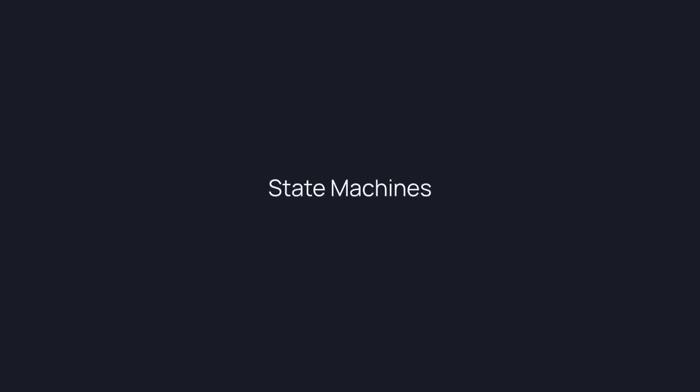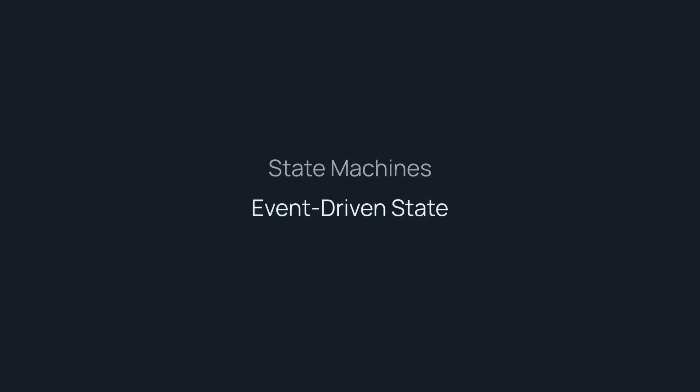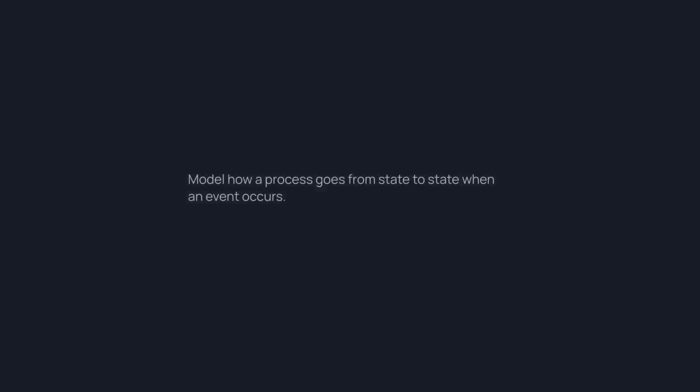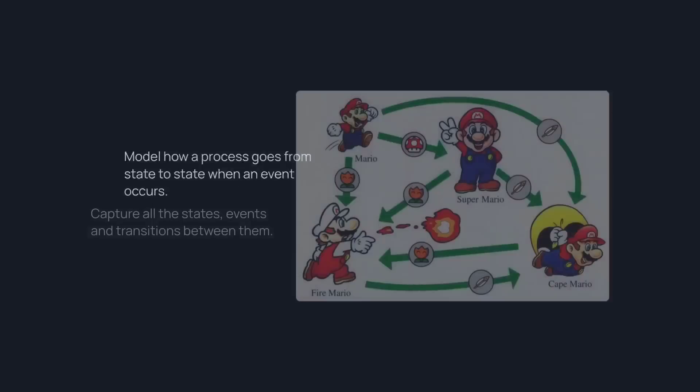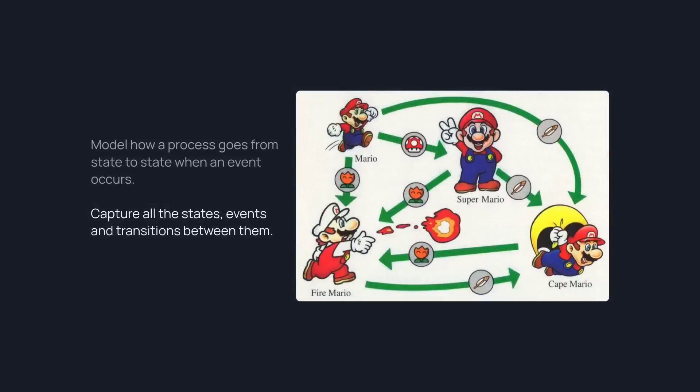And how beautiful is that? So let's talk about the next step, which are state machines. State machines is event-driven state — we can use state machines to model how a process goes from state to state when an event occurs. This is probably new to most web developers, but state machines are an old concept and very popular in game development. We can use state machines to capture all the states, events, and transitions between them.